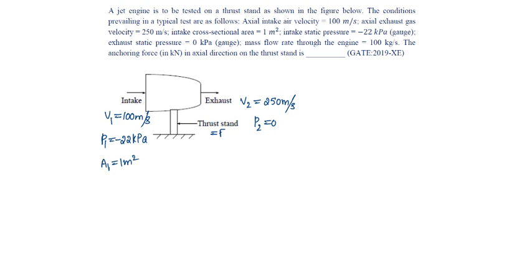Let us say this thrust as F. Mass flow rate Rho Q is given as 100 kg per second.